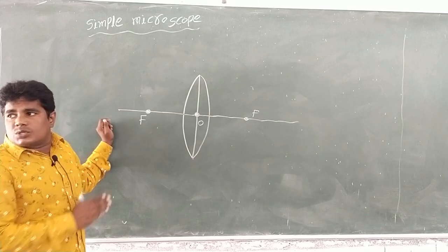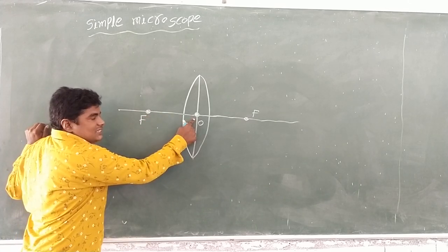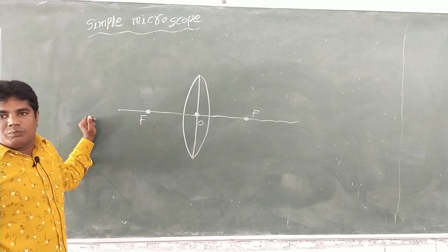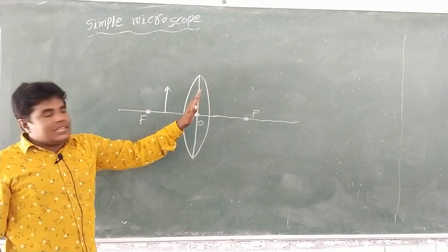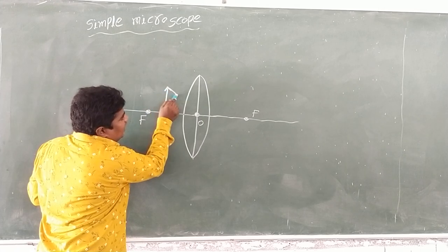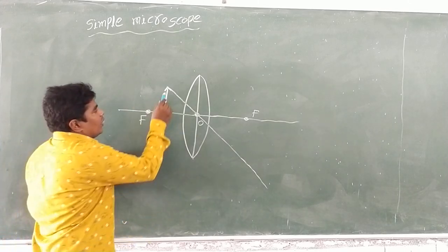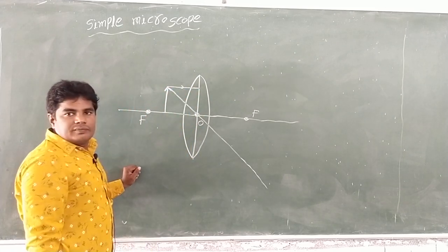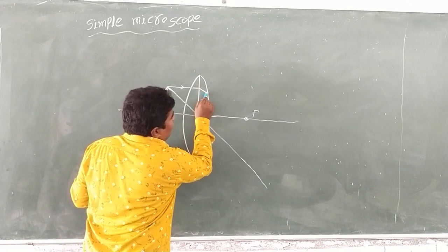The object is located between the optic center and the focus. The object emits light rays in different directions. A light ray traveling parallel to the principal axis passes through the lens and travels toward the focus.